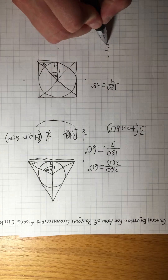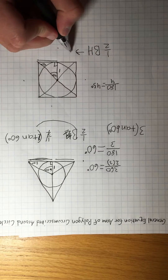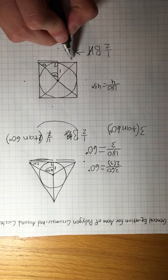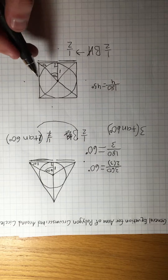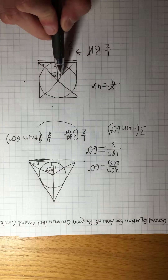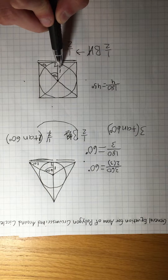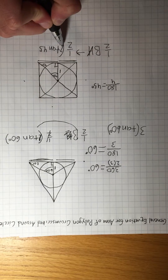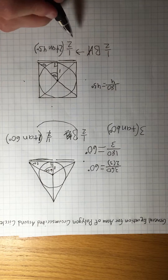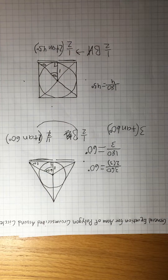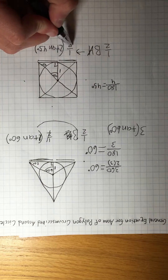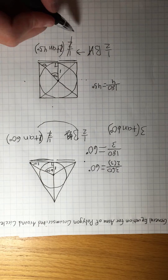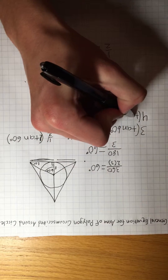Using one half base times height: the height is 1 and cancels, leaving one half times the base. The base is 2·tan(45°), since tangent of 45 equals opposite over adjacent, and the adjacent side is 1, so it's just the opposite side. The halves cancel, giving tan(45°) as the area of the small triangle. Multiplying by 4 sides gives 4·tan(45°) as the area of the square.